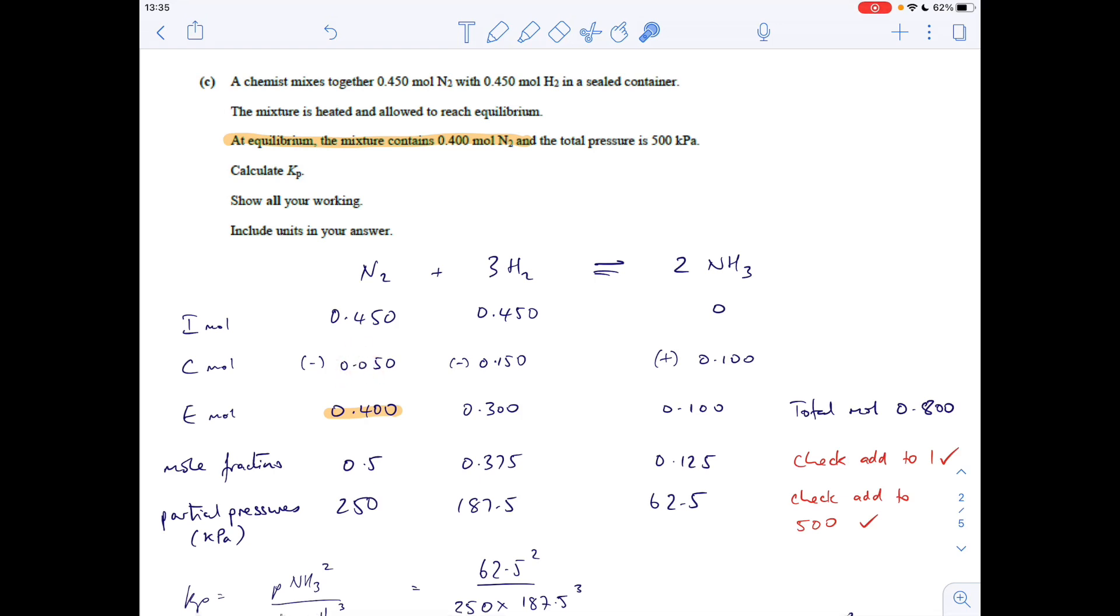Once we've got that change, we can apply the mole ratio. There's a 1 to 3 ratio here, so 3 times that many moles of hydrogen will react. That means they go to 0.3 at equilibrium. The amount of ammonia formed would be 2 times that from the ratio, so it goes up by 0.1, giving 0.1 moles of ammonia formed. The total moles at equilibrium is 0.8.